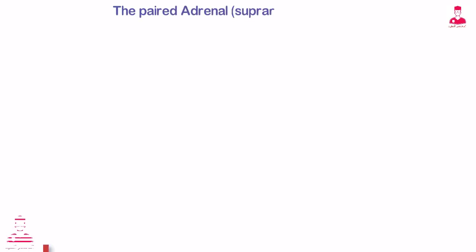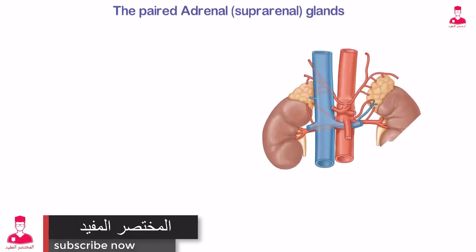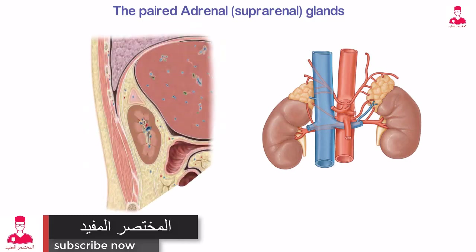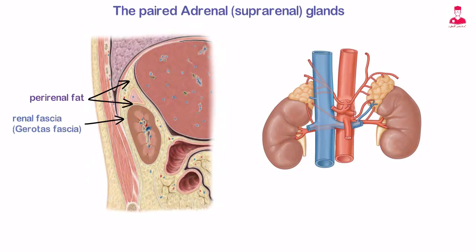The adrenal glands are retroperitoneal structures located superior to each kidney. They are separated from the superior surface of the kidneys by perinephric fat and are enclosed, along with the kidneys, by renal fascia.